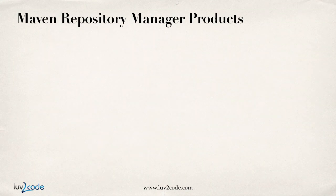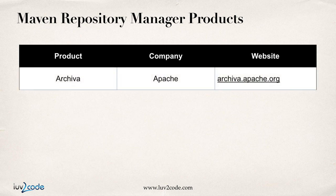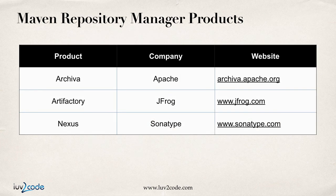To set up a Maven server at your company, you can make use of one of these server products. There's Archiva from the Apache group, Artifactory from JFrog, and probably the most popular Maven repository service, Nexus from Sonatype. Sonatype has a long history with Maven — they were some of the original committers on the Maven project. These products are out there, and the websites are listed on the far right.